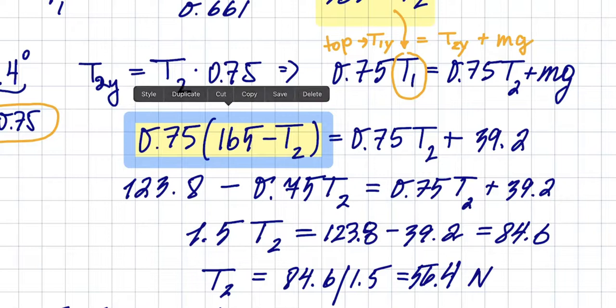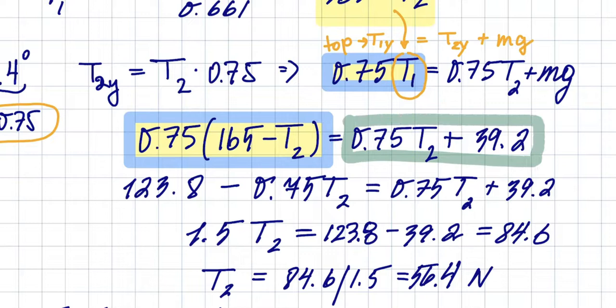Then all of this is this side, so the rest is just algebra. Then you distribute 0.75 through 165, that gives you 123.8. Multiply 0.75 times T2, then you have twice this and this on either side with the opposite side, so you just add them together—that's one and a half T2.